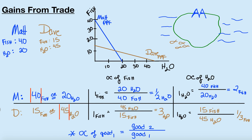Now we look for our comparative advantages. We know Matt has the absolute advantage in fish and Dave has the absolute advantage in water. In relative terms, who is it cheaper for to produce fish? Matt gives up only half a unit of water per fish, where Dave has to give up 3 units of water. So Matt definitely has the comparative advantage in fish. For water, Dave gives up only one third of a fish per unit of water, while Matt gives up 2 fish — so Dave has the comparative advantage in water.